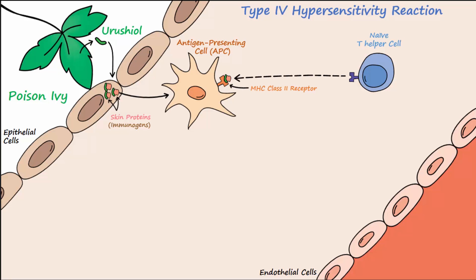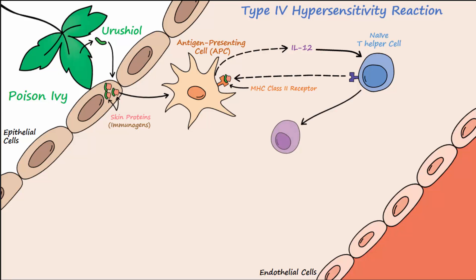The APC presents a portion of the protein using an MHC class 2 receptor, which T helper cells are able to recognize and bind to. After binding, the APC releases cytokines that cause the naive T helper cell to differentiate. If the APC releases certain cytokines including IL-12, then the naive T helper cell will differentiate into a type 1 T helper cell, known as a TH1 cell.